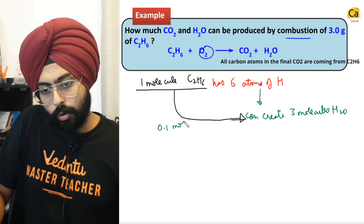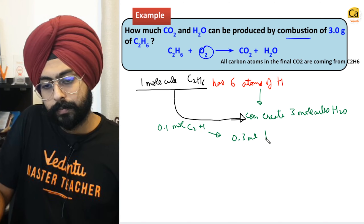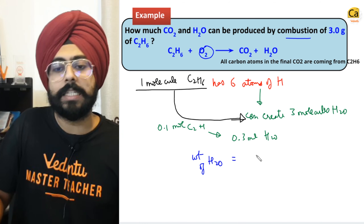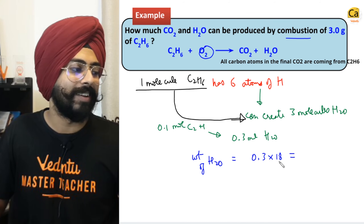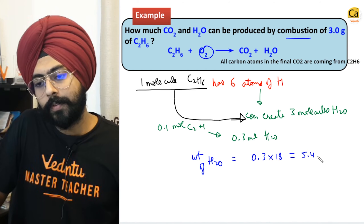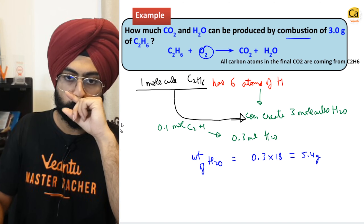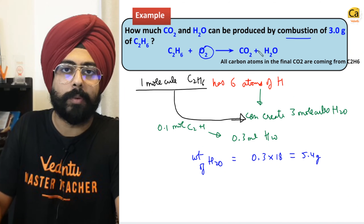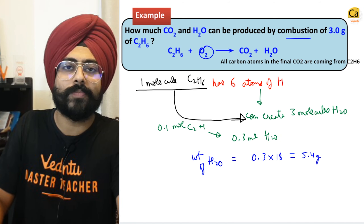Weight of H2O produced is equal to 0.3 × 18. Instead of balancing the entire equation, we just looked at carbon — conserved carbon, because all the carbon will be creating carbon dioxide. We just looked at hydrogen — conserved hydrogen, because all the hydrogen would be creating water. As simple as that.